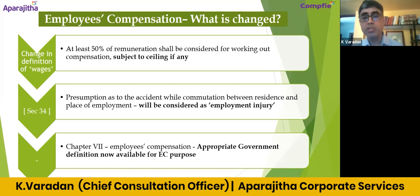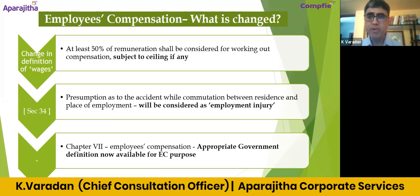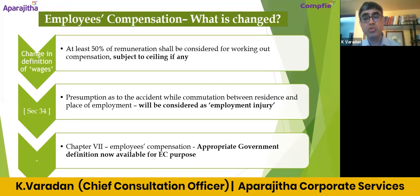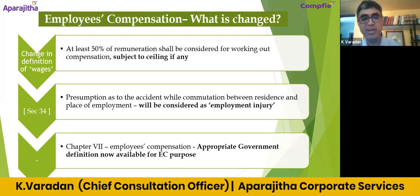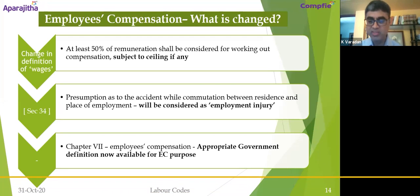Under Chapter 7 — Employees' Compensation and the Appropriate Government: currently the term 'Appropriate Government' is not defined under the Employees' Compensation Act, and there is confusion as to whether the state or central authority is the enforcing authority. However, since the term 'Appropriate Government' is now defined and common across all nine areas under the Code on Social Security, including Employees' Compensation, that issue should now get resolved.